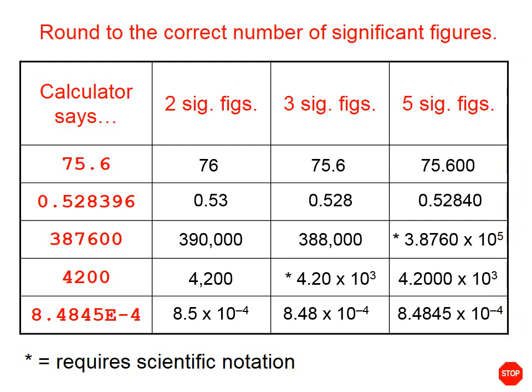And there you have the rest of those answers. So, whenever you hit your equal sign on the calculator, before you write down your answer, make sure you look again at the quantities that are given and use the mathematical operations rule to determine how many significant figures you need to round to and then round it accordingly.